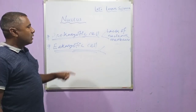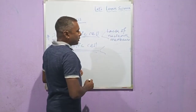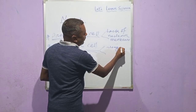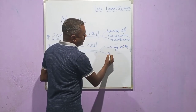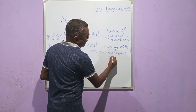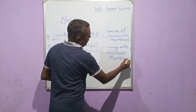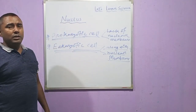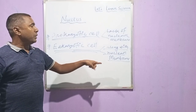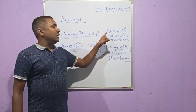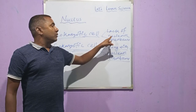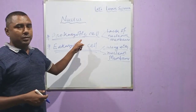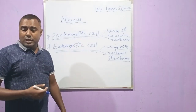In the eukaryotic cell, the nucleus is present along with a nuclear membrane. So in eukaryotic cells, the nucleus is well-defined with a nuclear membrane, whereas in prokaryotic cells the nucleus is present but lacks the nuclear membrane.